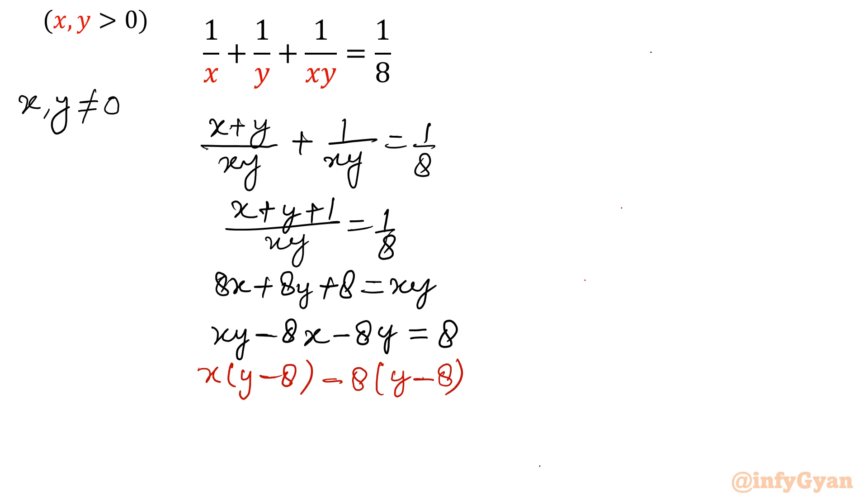Once it is (y-8), then I will take (y-8) common from left hand side completely. So what I added here, that is 64. -8 times -8 is 64. So I need to add 64 to other side also. This is called Simon's factorization trick.